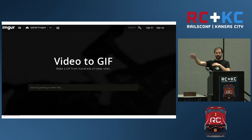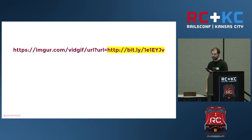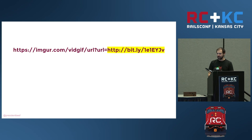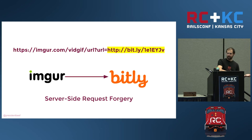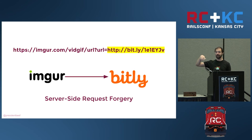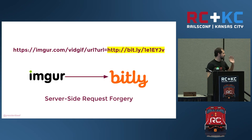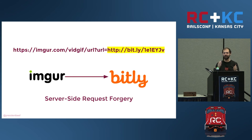You point it at a video like YouTube, it converts it to a GIF, and then you can show it on the site. This is called server-side request forgery, because you're basically asking a server — like Imgur's servers — to make a request to another server essentially on your behalf. You can use this for things like denial-of-service attacks or any attack where you'd like to hide behind someone else, or maybe they have more bandwidth than you do, or a trust relationship between servers that you don't have.